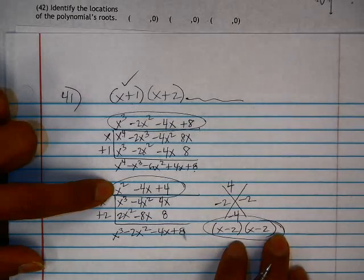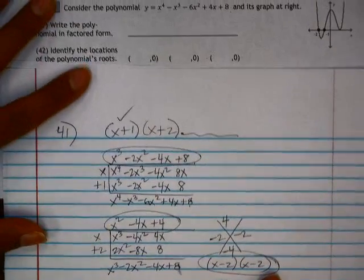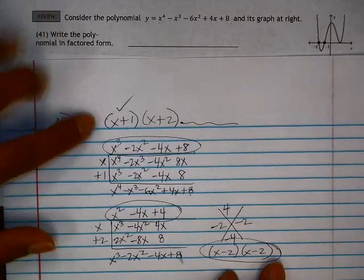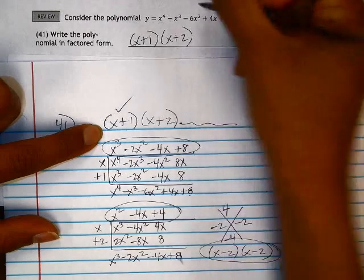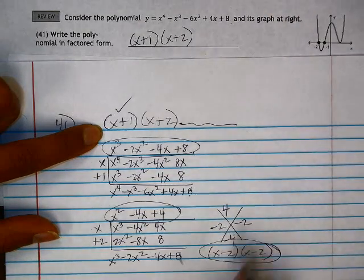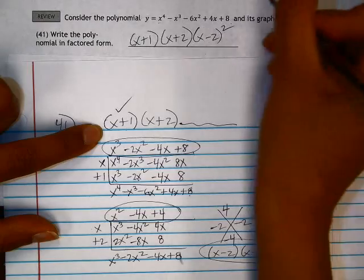These are the other factors of the polynomial. So when I write my polynomial in factored form, I have the original two factors that are given to us by looking at the graph, and then I have these two factors. So I'm going to write that as x minus 2 quantity squared.